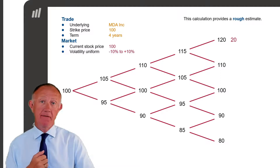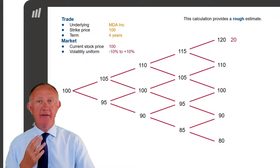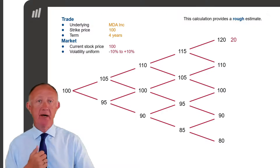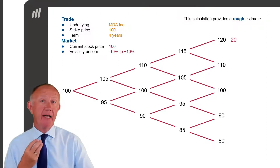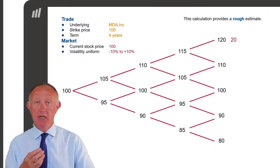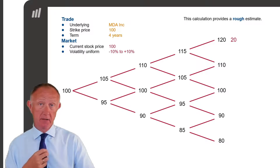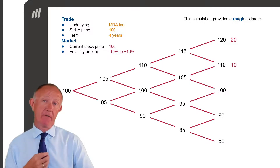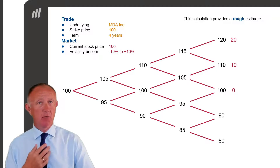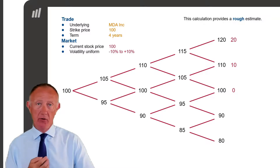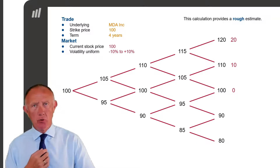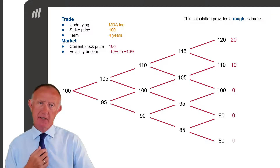Next, we work out the payoff for each of those possibilities. If the price goes to 120, the payoff is 20 — we can buy the stock for 100, it's worth 120, our gain is 20. If the stock goes to 110 and we can buy it for 100, we make a profit of 10. If the stock stays at around 100, we don't make a profit or a loss. And if the stock price falls, we simply do not exercise the option.